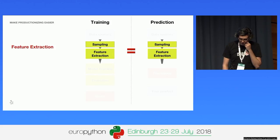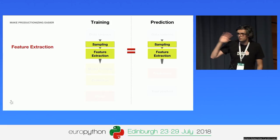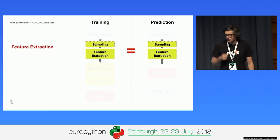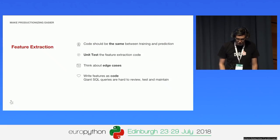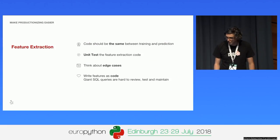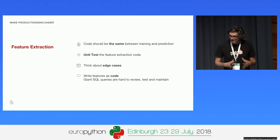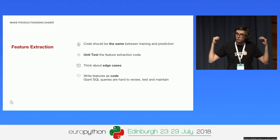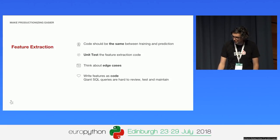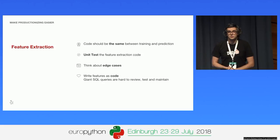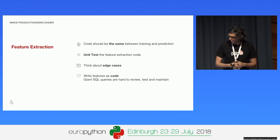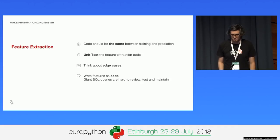Let's dig into several parts. My schema might have led you to believe that training and prediction feature extraction were different — they are not. You should not have two pieces of code for feature extraction. Apart from labels, this should be unit tested. You can use things like Hypothesis to generate a bunch of random data to test all of your edge cases. And don't write SQL — this makes people's lives hard. Write everything as code that can be tested, unit tested mostly.